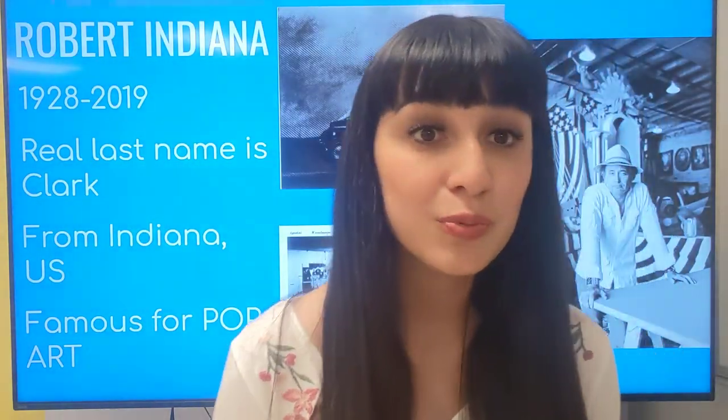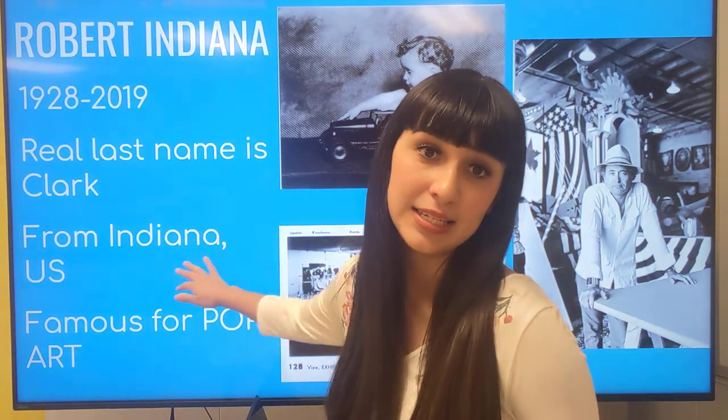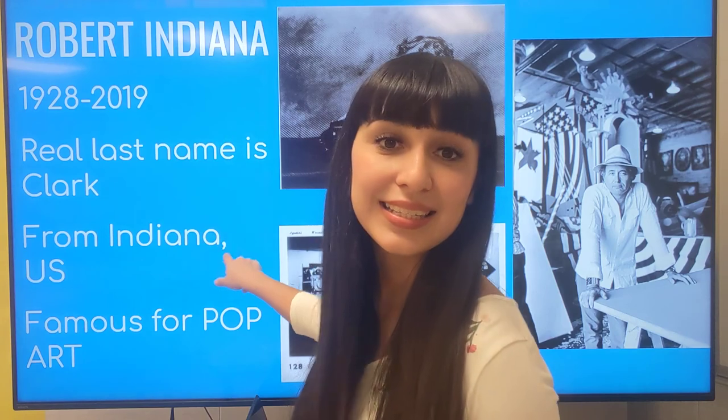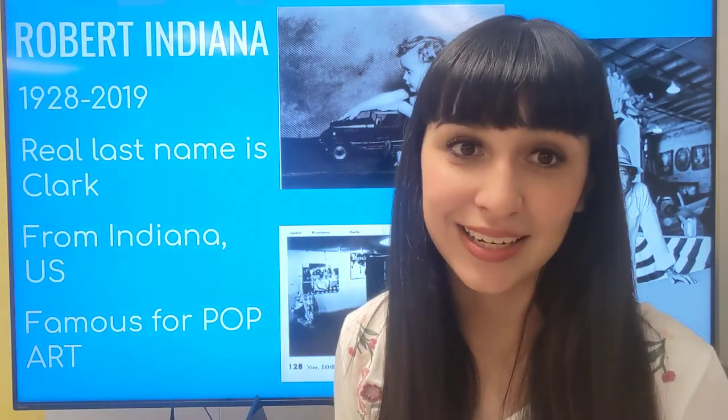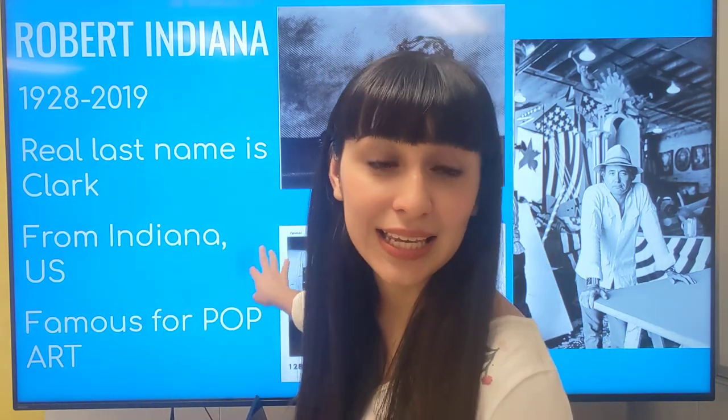Robert Indiana was born in 1928 — a really long time ago, 92 years ago. He was from the United States, from the state of Indiana. His name and the state where he's from are the same, and that's no accident. He did that on purpose. Robert Indiana was actually born with a different name — his real name is Robert Clark.